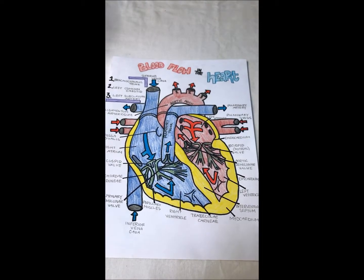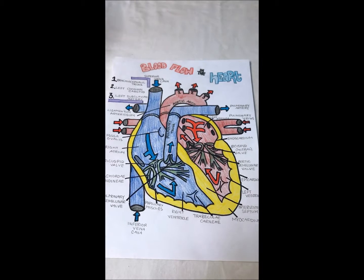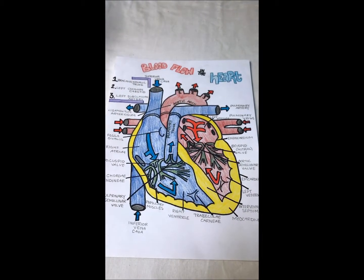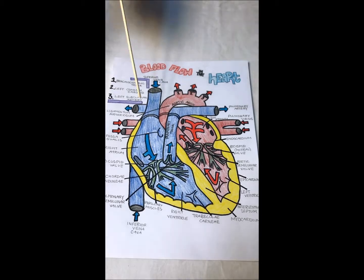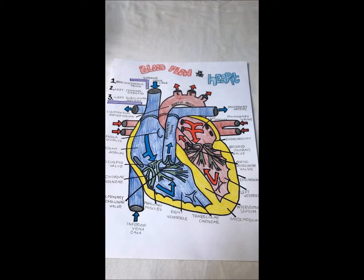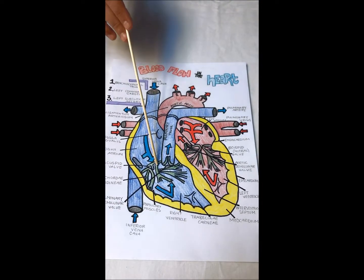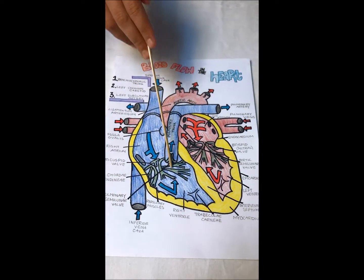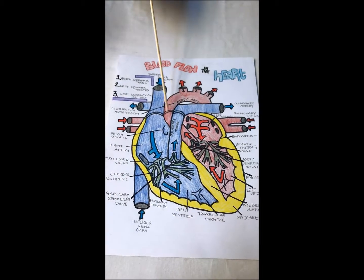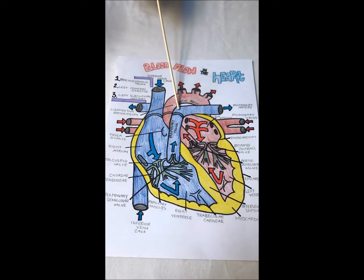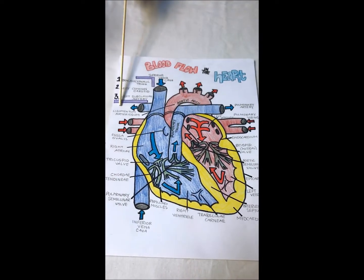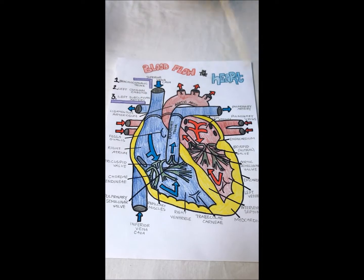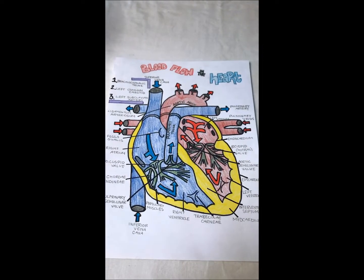Now for the blood flow. The superior vena cava brings blood from the body above the diaphragm, and the inferior vena cava brings blood from the body below the diaphragm. Both dump blood into the right atrium, which is oxygen-poor. The blood then moves through the tricuspid valve and into the right ventricle — still oxygen-poor. After that, it goes through the pulmonary semilunar valve and into the pulmonary trunk. Once there, the blood goes into the lungs through the pulmonary arteries. When the blood comes back through the pulmonary veins, it is now oxygen-rich. The pulmonary veins dump blood into the left atrium.